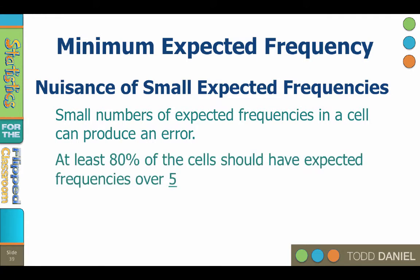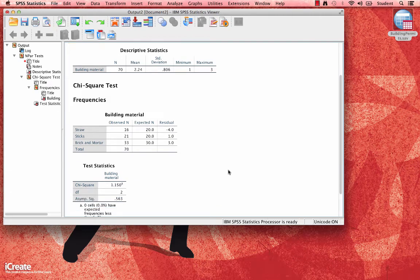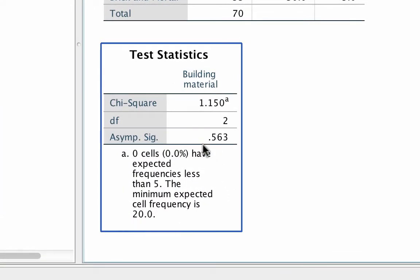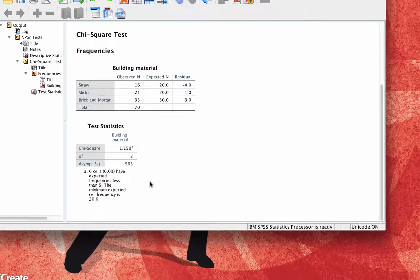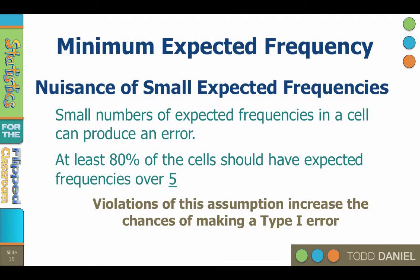To address this problem, at least 80% of the cells should have expected frequencies greater than or equal to 5. You will notice that SPSS gives you a notification about the percentage of cells that have expected frequencies less than 5. Violations of this assumption increase the chance of making a type 1 error — you will find outcomes that appear to be statistically significant, but are not.